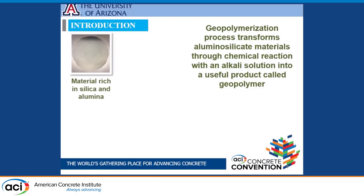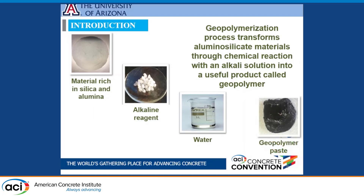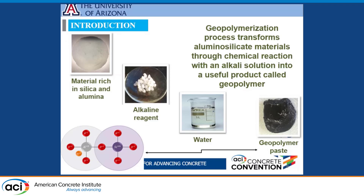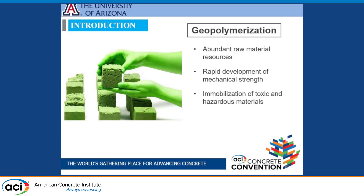Geopolymerization is basically alkali activation of material rich in silica and alumina. The tailings are high in silica and alumina. Some tailings are very active because they come fresh from the plant, but some — like those in this study — are from closed mines, already weathered for more than 50 years. The alkali activation of tailings results in a geopolymer paste that provides very good bonding. Advantages include abundant raw materials, rapid development of mechanical strength, immobilization of toxic materials — stabilizing heavy metals inside the polymer network — and significant reduction of greenhouse gases compared to conventional cementitious materials.